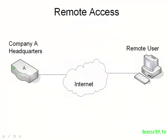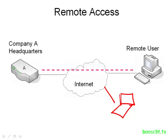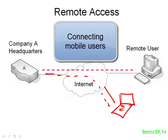Our third scenario is often referred to as remote access or just access. Here we're talking about a single user connecting back to a location. We have company A headquarters, and a remote user who goes home at night and still has work to do, or an emergency comes up and they need to access something at company headquarters. At home, using their desktop, they establish a VPN back to the company. This is also used for mobile users — traveling people on laptops who will use a VPN no matter where they are to connect back to the company.